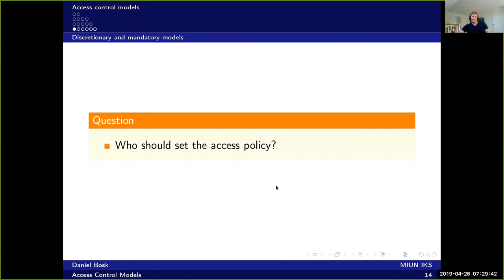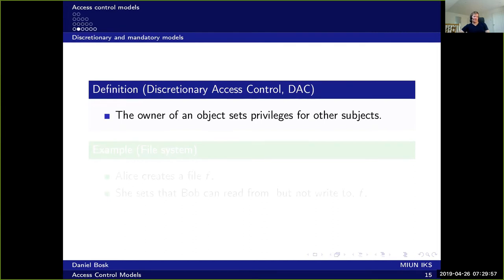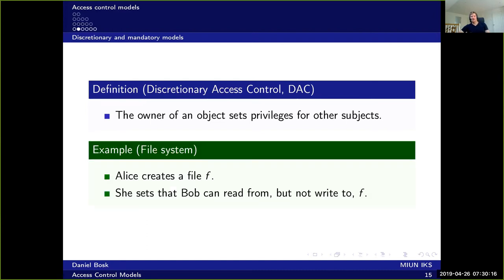One question we haven't talked about so far is who should set the access policy. There are two extreme answers. The first is discretionary access control, which means the owner of an object sets the privileges for other subjects. That makes sense — it's the owner who owns the data and can set who else is allowed to access it. For instance, if Alice creates a file F, she can set that Bob can read from F but cannot write to F. This is the classical setting and the origin of discretionary access control — it comes from file systems in computers.